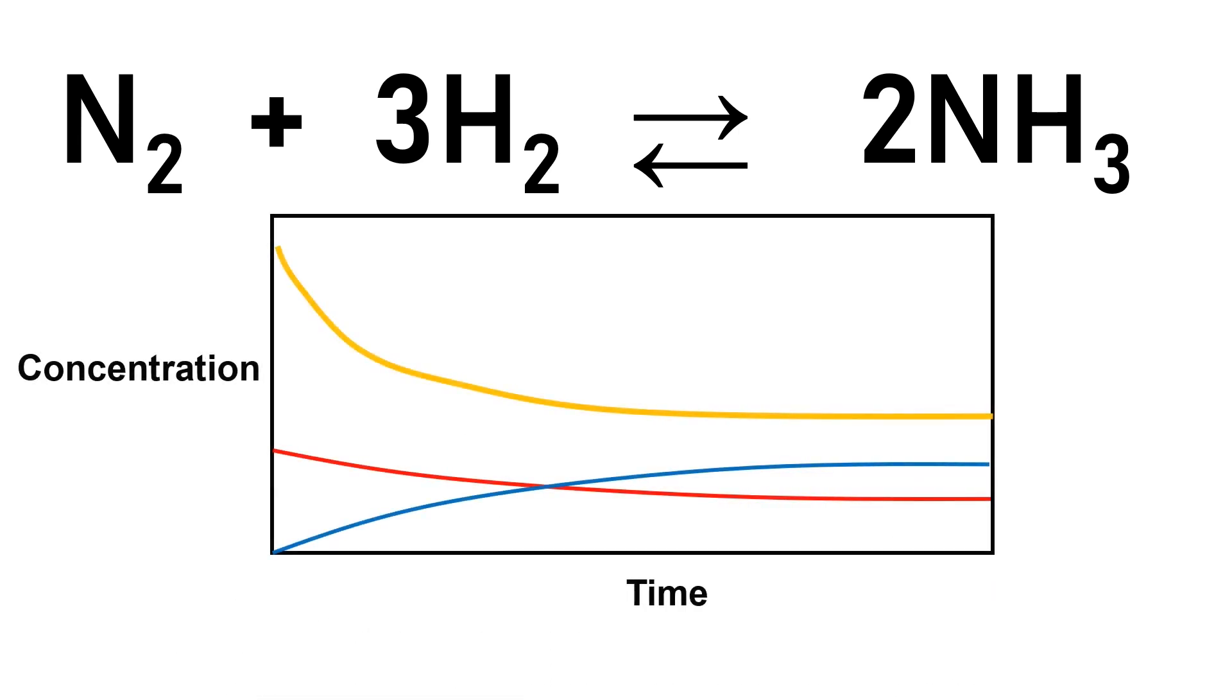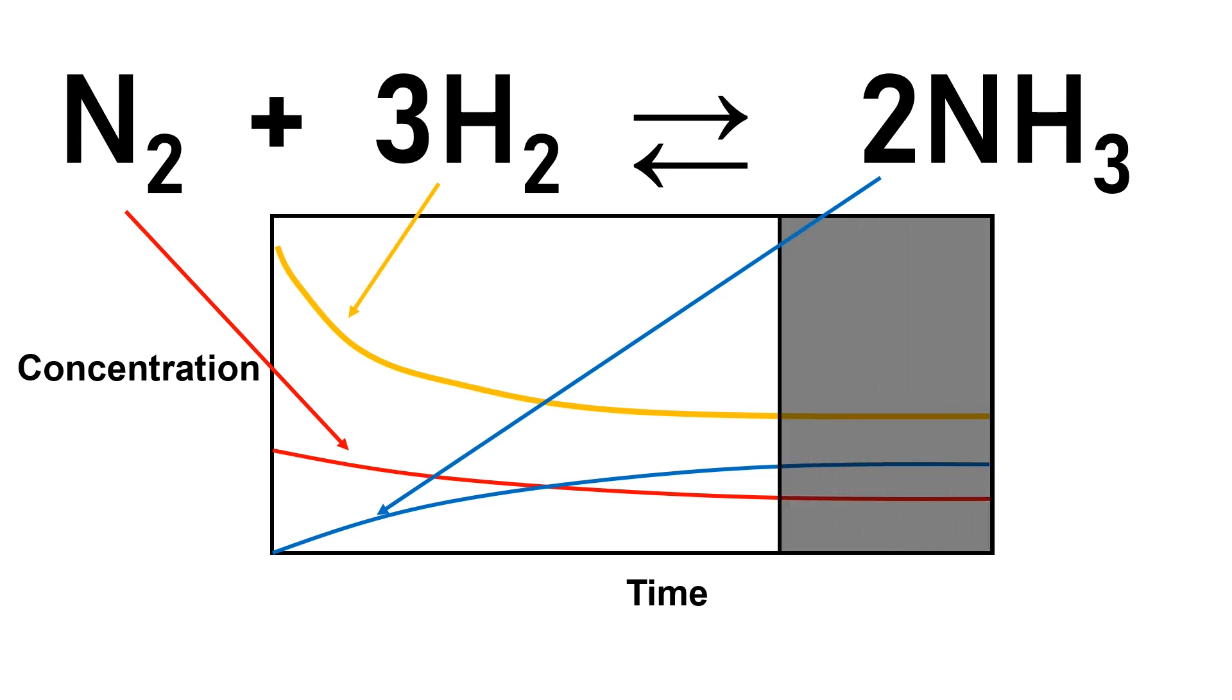Consider the graph of the concentration versus time for this reaction. Here, hydrogen is gold, nitrogen is red, and ammonia is blue. Notice that after the reaction begins, the concentrations of hydrogen and nitrogen decrease with time, and the concentration of ammonia increases with time, as it is produced.